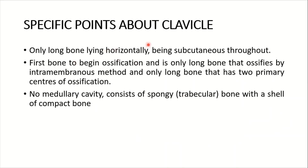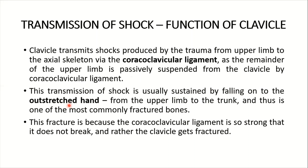Some peculiarities of the clavicle: it is the only long bone lying horizontally and is subcutaneous throughout its length. It is the first bone to begin ossification and the only long bone that ossifies by the intramembranous method. It is also the only long bone that has two primary centers of ossification. It has no medullary cavity and consists of spongy (trabecular) bone with a shell of compact bone.